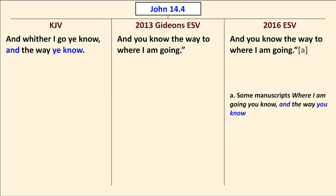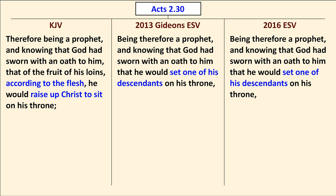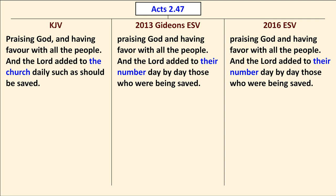In John 14:4, the King James Version reads "And whither I go, you know, and the way you know," but the Gideon's ESV does not follow the TR — it reads "you know the way to where I'm going," though the 2016 ESV does put the TR reading in a footnote. In Acts 2:30, the King James Version has "the fruit of his loins according to the flesh, he would raise up Christ to sit on the throne," but the Gideon's ESV agrees with the ESV: "he would set one of his descendants on the throne" — so "raise up Christ" is absent. In Acts 2:47, the Gideon's ESV has "the Lord adding to their number day by day" in agreement with the 2016 ESV, rather than the TR's "adding to the church daily such as should be saved."